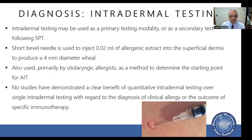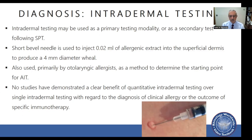Intradermal testing may be used as a primary or secondary test following skin prick testing. A short-bevel needle is used to inject 0.02 milliliters of allergenic extract into the superficial dermis to produce a four-millimeter diameter wheal. It is also used primarily by otolaryngic allergy to determine the starting point for allergen immunotherapy. There are no studies demonstrating a clear benefit of quantitative intradermal testing over single intradermal testing for diagnosis or immunotherapy outcomes. Results are read in about 15 to 20 minutes, compared to negative and positive controls.